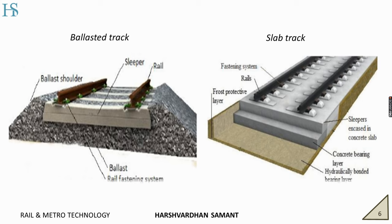There are two figures in front of you — one is ballasted to your left and the slab track to your right. You may easily notice the difference between the two. The figure to the left consists of black colored stone gravels, which in railway terms we call ballast. So the track having ballast is called a ballasted track. While to the right, we have a concrete slab on the bonded layer, a concrete bearing layer, and finally sleepers embedded in the concrete slab. As it consists of a concrete slab, we say it is slab track or ballastless track.